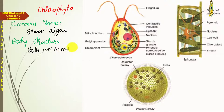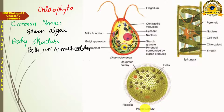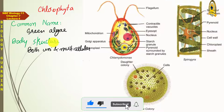Examples include Spirogyra, which is multicellular, and Chlamydomonas, which is unicellular. Volvox is a colonial form with some level of organization — it can be called multicellular or colonial, and individual cells can also exist independently. So the body structure includes both unicellular and multicellular forms.